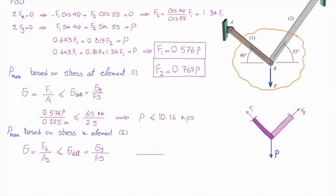Force in that element is 0.769 P. Area of that element is 0.375 squared inch. And that should be smaller than the allowable stress. The allowable stress here is equal to 36 KSI divided by factor of safety, which is 2.5. And I can determine another P here. Here, the force should be smaller than 7.02 kips.